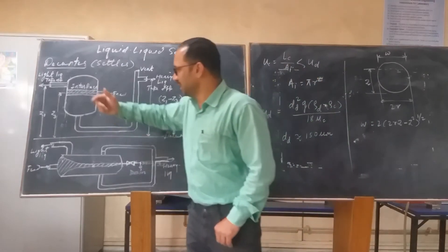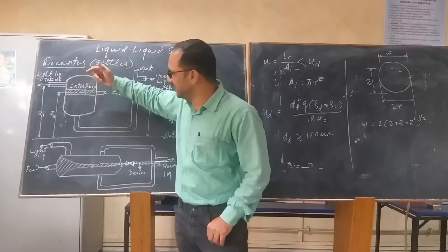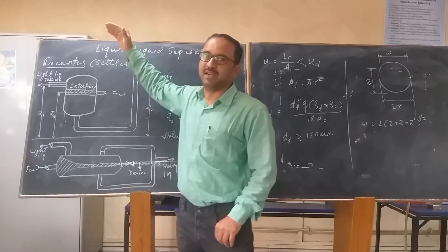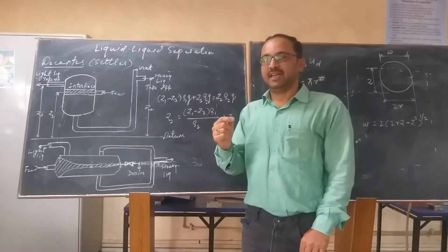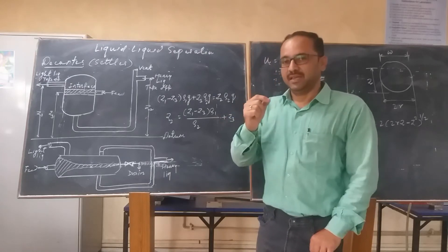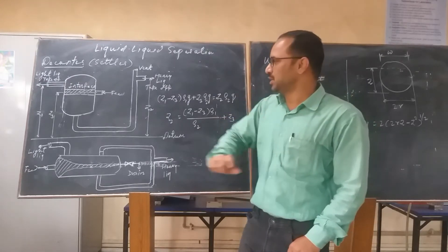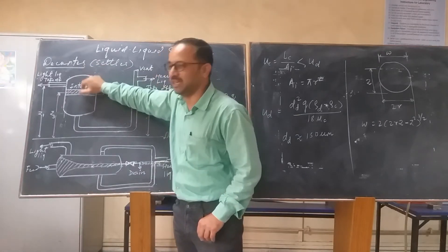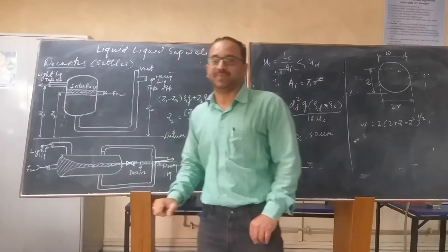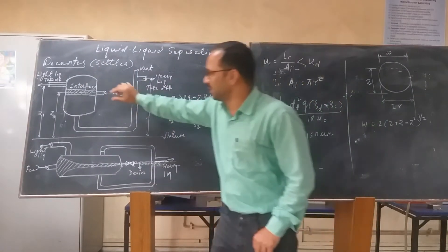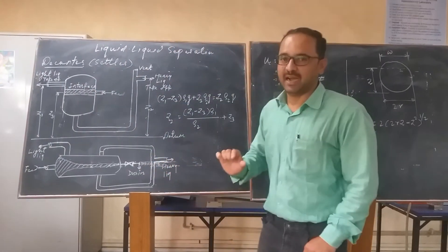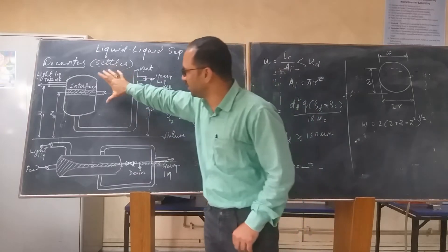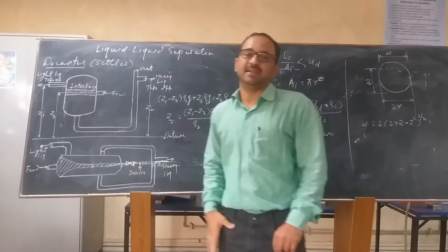If the dispersed phase is light, it moves upward against the continuous phase. If the dispersed phase is heavy, the droplets of the dispersed phase settle down across the interface. The height of the dispersion band is about 10% of the total height of the decanter.